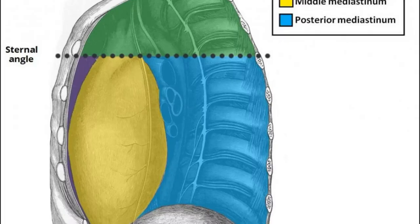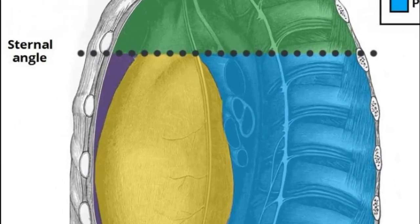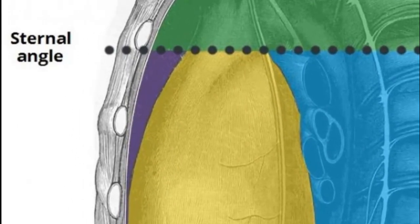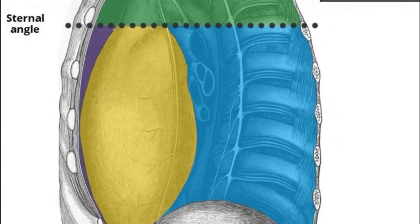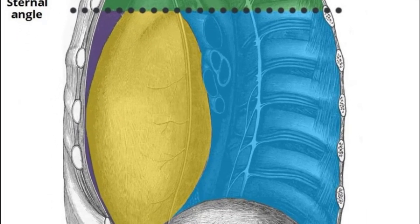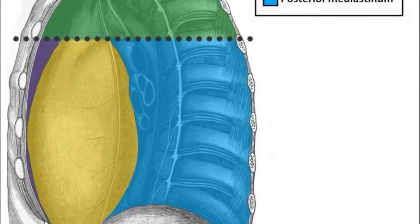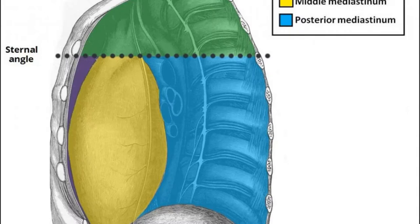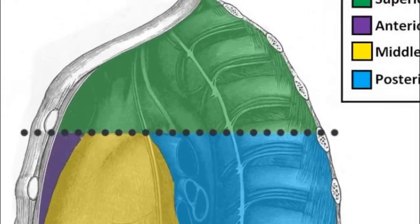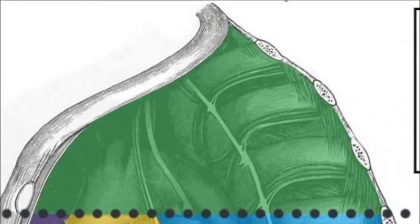With the heart in mind: in front of the heart would be the anterior, the heart itself is within the middle mediastinum, behind the heart would be posterior, and above it would be superior. Let's speak about each of them in turn.